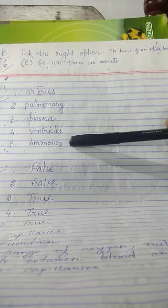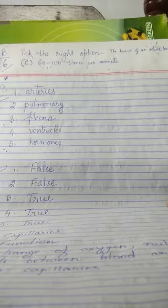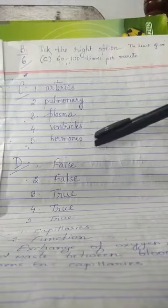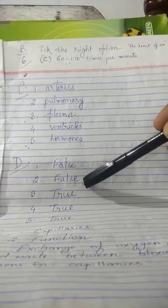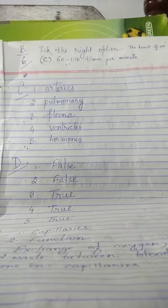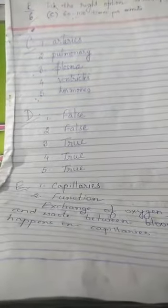Now move to the next, that is true or false. D. In that also, first one is false, second false, third true, fourth true, fifth true. Next there is one question.